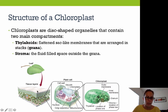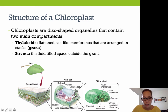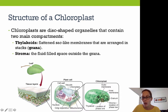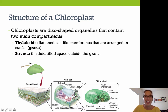Looking at a cross-section of a leaf, the little green bean-like things are chloroplasts. Within the chloroplasts, you have stacks called grana (singular: granum). The disc-like structures are the thylakoid membranes, where the light-dependent reactions take place. Outside these stacks, within the inner membrane of the chloroplast, there's fluid called stroma, where the light-independent reactions — the Calvin cycle — take place.